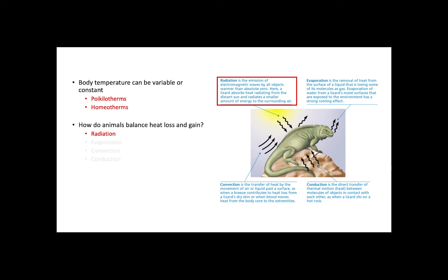Animals need to balance their heat loss and gain as a way to maintain a specific body temperature. There are four major processes that animals use to regulate heat loss and gain. The first is radiation, defined as the emission of heat by objects warmer than absolute zero. An example is a lizard absorbing heat from the sun.